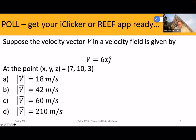Next question: suppose the velocity vector V in a velocity field is given by our familiar equation, where at the point X, Y, Z equals (7, 10, 3), what is the magnitude of our velocity? The options are: 18 m/s, 42 m/s, 60 m/s, or 210 m/s.